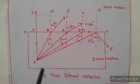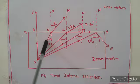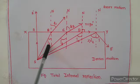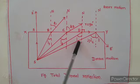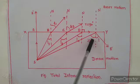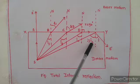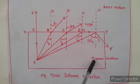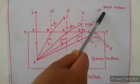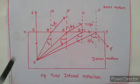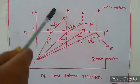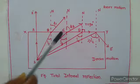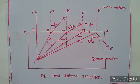The incident angles i1, i2, i3, and ic — ic means this is the critical angle. Denser medium, rare medium — this is n and n-dash, and this is the normal.